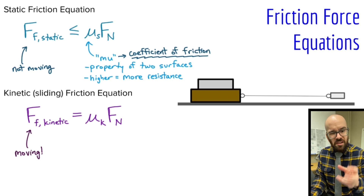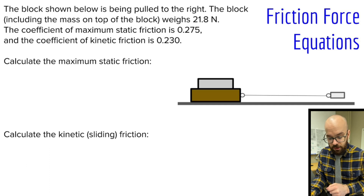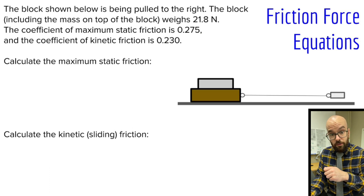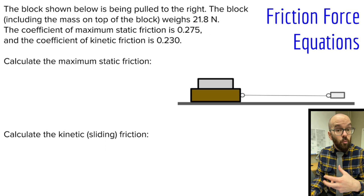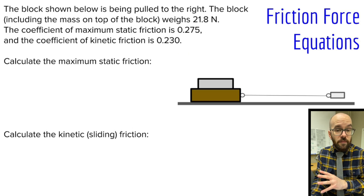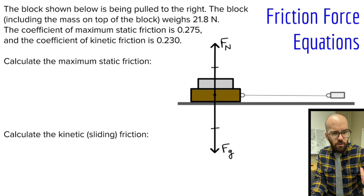Let's go through an example similar to what I did in the experiment to help us apply these two equations. The block shown below is being pulled to the right. The block, including the mass on top, weighs 21.8 newtons. The coefficient of maximum static friction is 0.275, and the coefficient of kinetic friction is 0.230. Notice that the kinetic friction coefficient is smaller than the static friction coefficient — to relate back to our experiment, it took 18.5 newtons to get it started but once moving there was only about 12 newtons of friction. Before we do anything else, let's draw our free body diagram: force of gravity downward, normal force upward — those are balanced. Tension force to the right and friction force to the left.